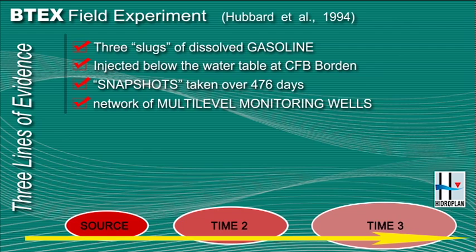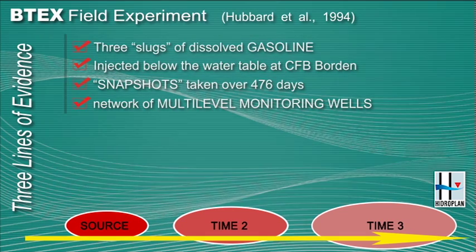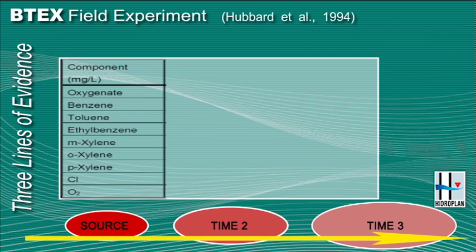We also want to see if we can outline the dispersion, advection, and retardation that might be occurring. The three slugs or masses of water were injected — two cubic meters of each — with the chemistry you see here.